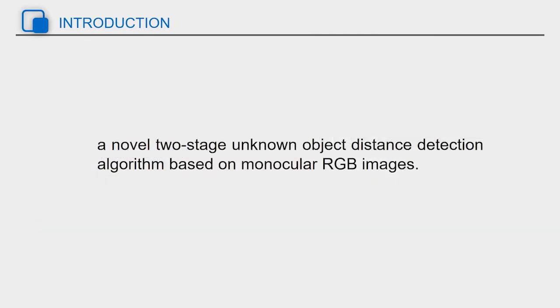The current robotics field is too dependent on depth camera, and the traditional method based on RGB cameras is almost forgotten. But we believe that the traditional method should not be replaced by the depth camera, but as another way for researchers to achieve robot tasks. So, we design a novel two-stage unknown object distance detection algorithm based on monocular RGB images.